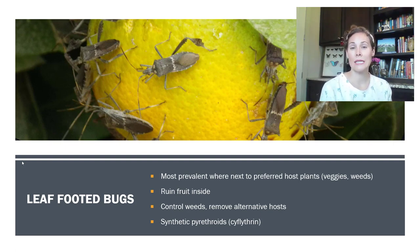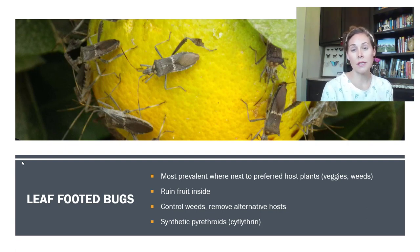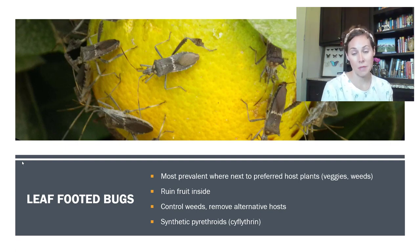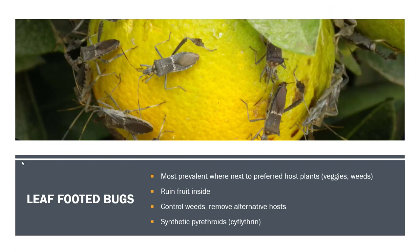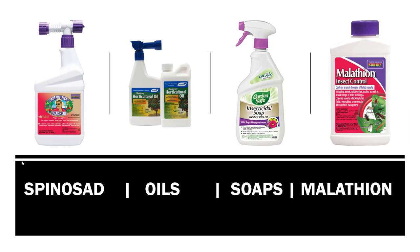On the outside of the fruit you don't really see damage from leaf-footed bugs, but what they will do is rot and ruin the inside of the fruit, making it inedible. To control them, reduce weeds and remove alternative hosts. A synthetic pyrethroid like cyfluthrin (C-Y-F-L-U-T-H-R-I-N) is one option, though generally these insects are controlled by one of four things available at the nursery: spinosad, oils, soaps, or malathion.